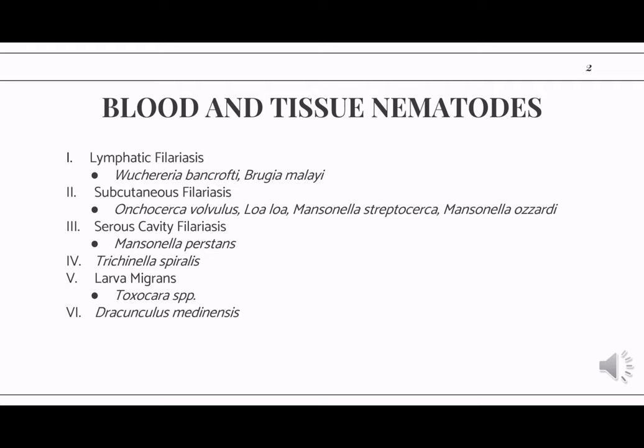The filarial worms are divided based on what part of the human body they inhabit. We have the lymphatic filarial worms, which consists of Wuchereria and Brugia. We have the subcutaneous filarial worms, that would be Onchocerca, Loa loa, and two species from the Mansonella genus.